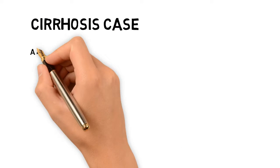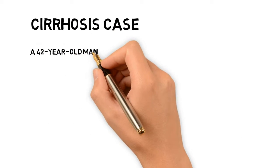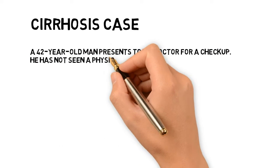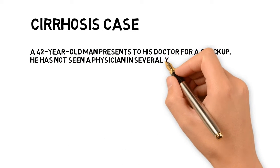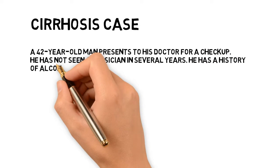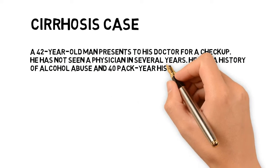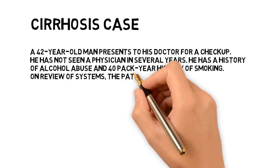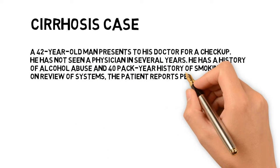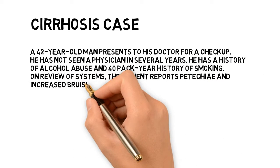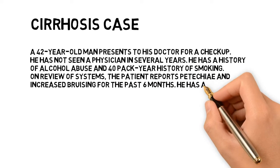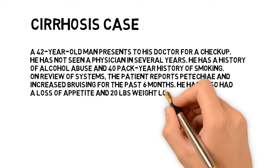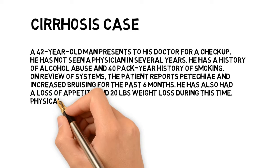Cirrhosis case. A 42-year-old man presents to his doctor for a checkup. He has not seen a physician in several years. He has a history of alcohol abuse and a 40-pack-year history of smoking. On review of systems, the patient reports petechiae and increased bruising for the past 6 months. He has also had a loss of appetite and 20 pounds weight loss during this time.